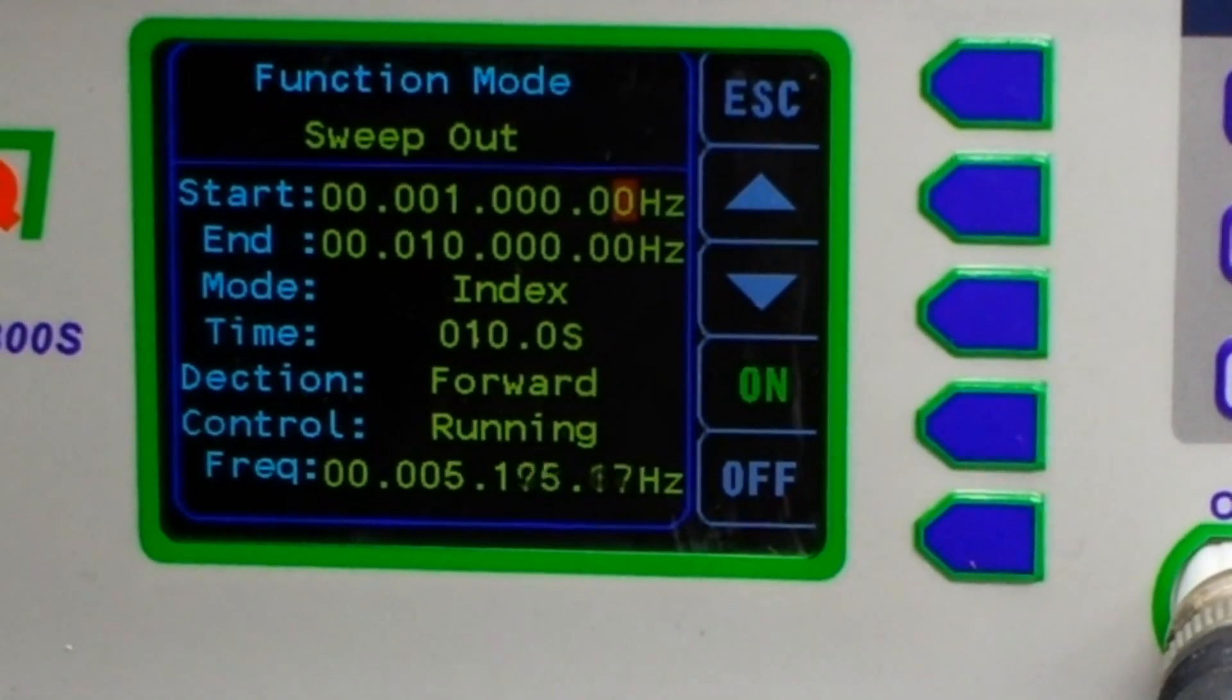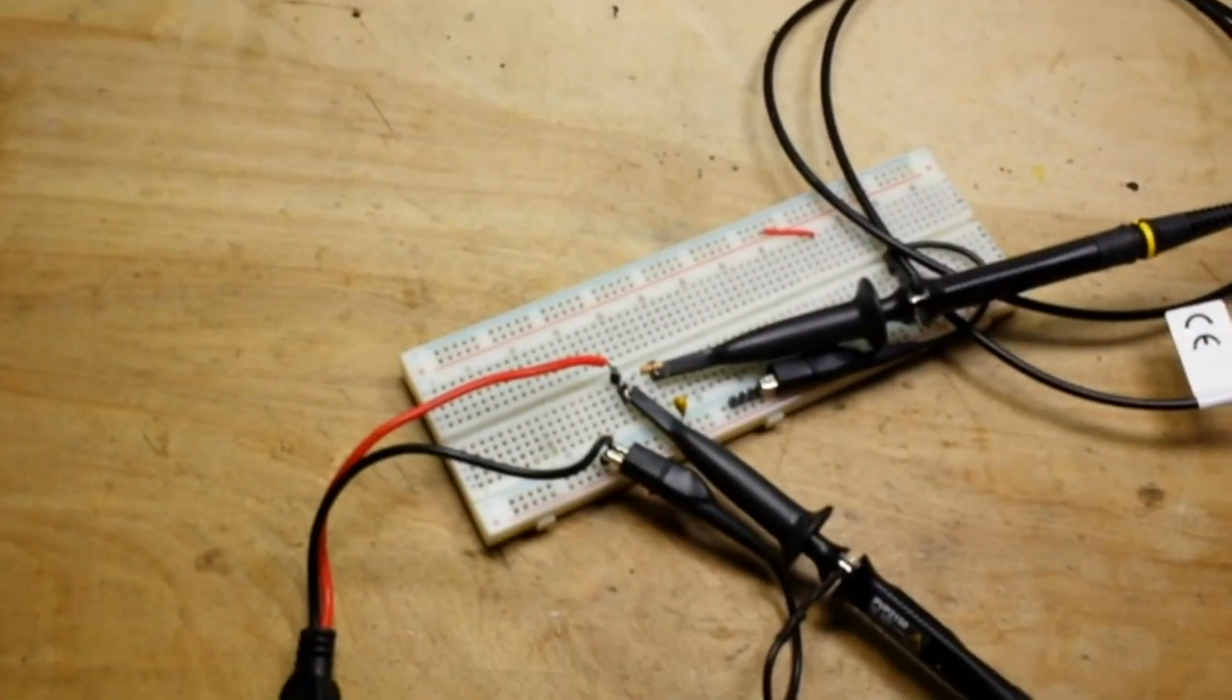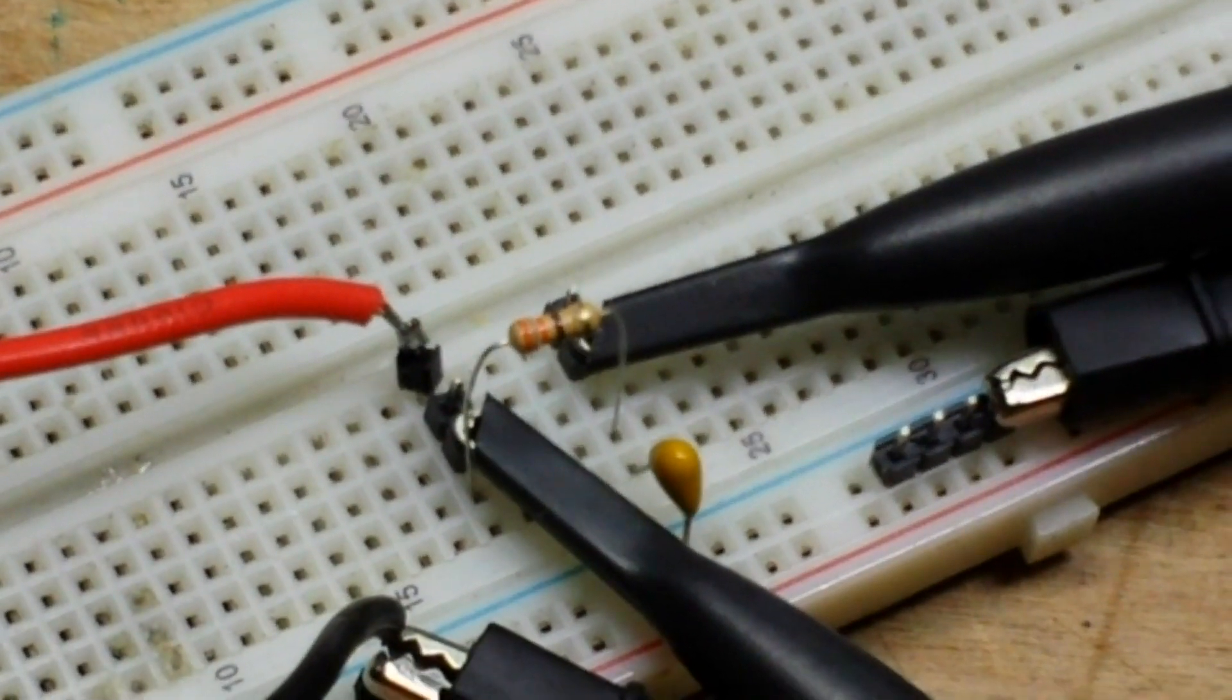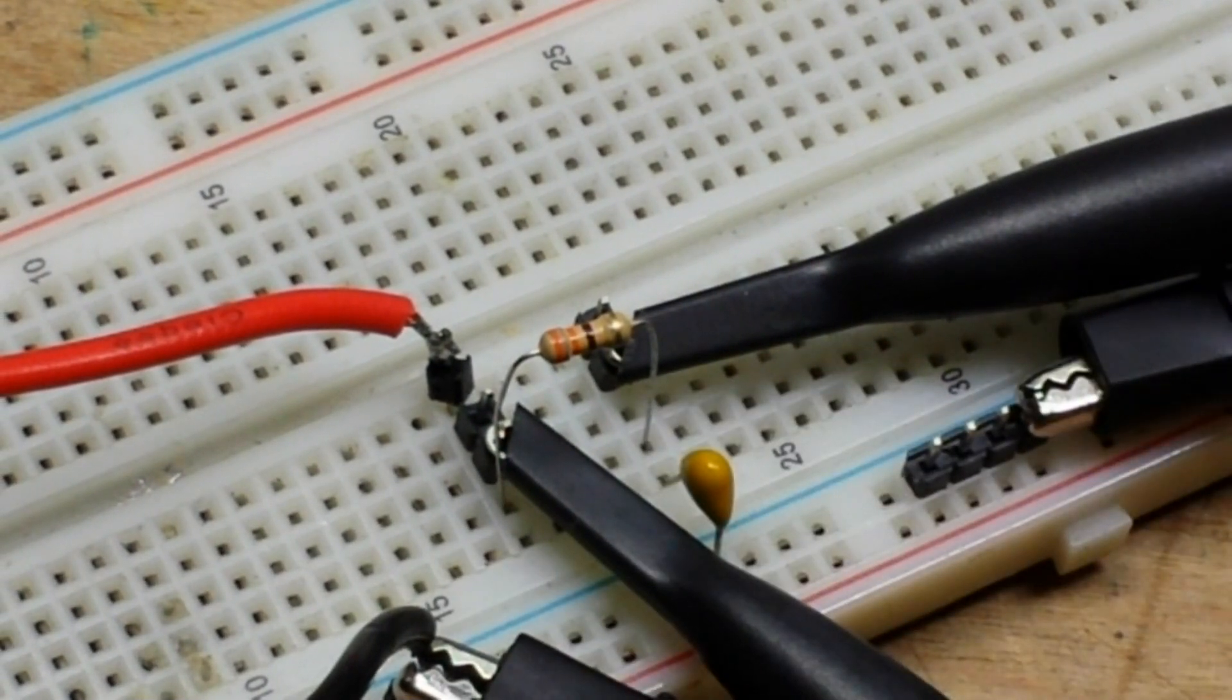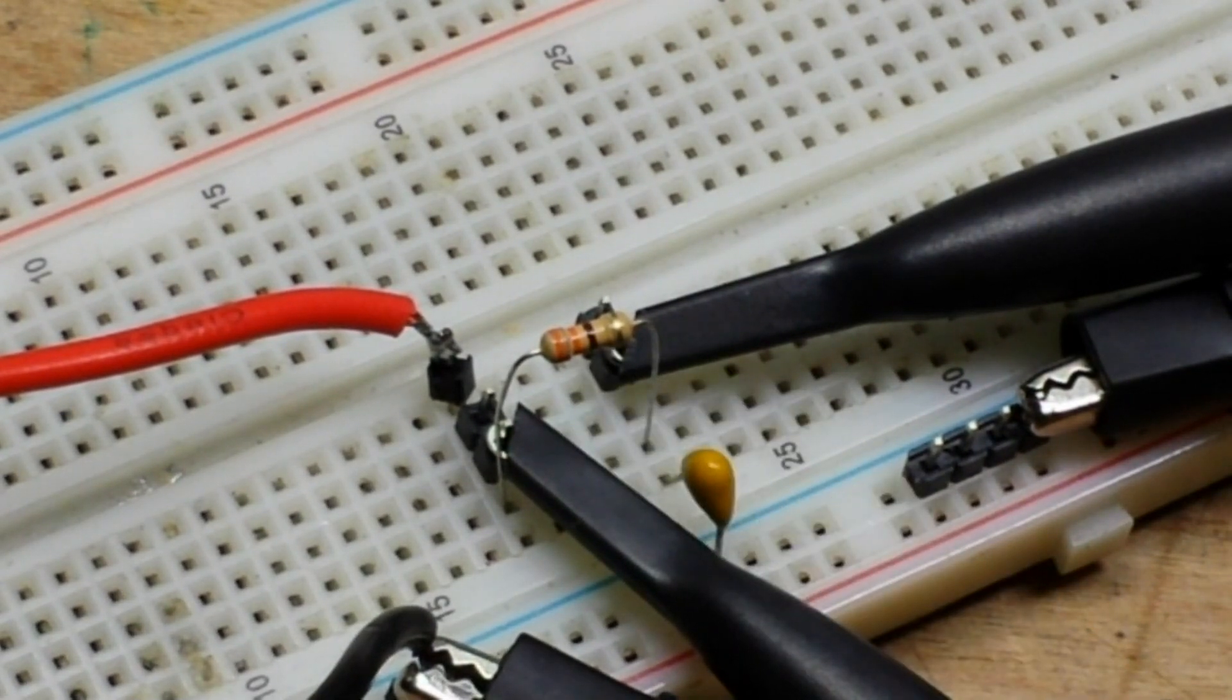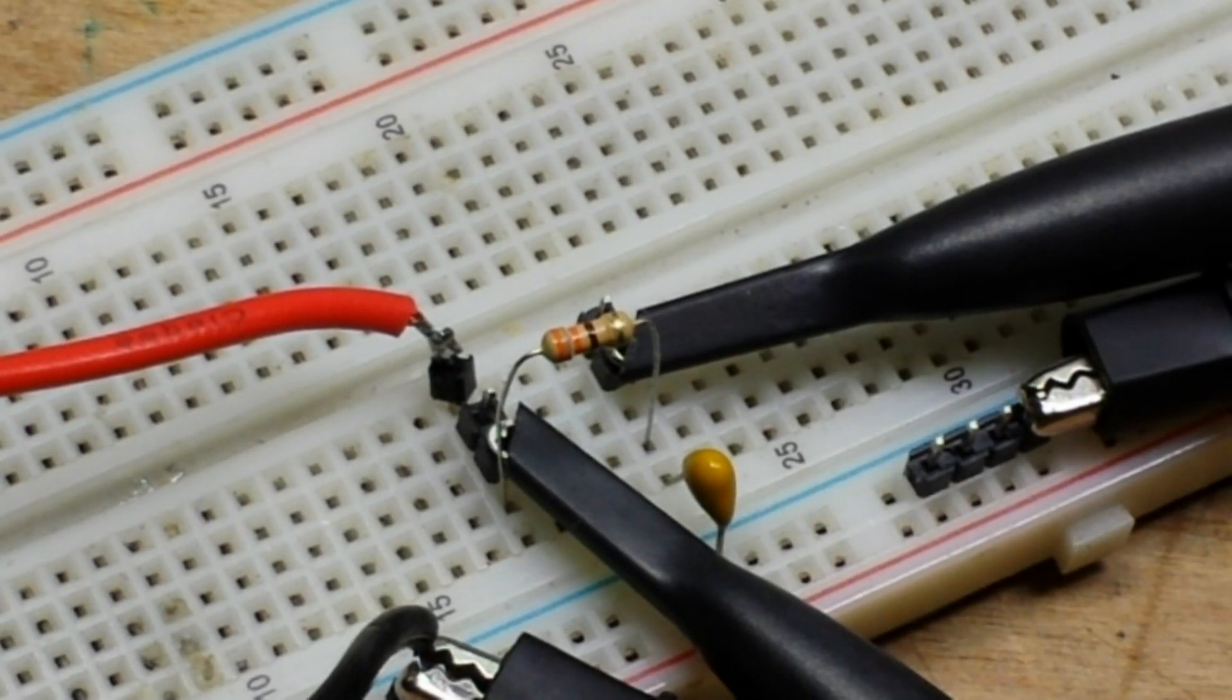That's what we got going on. We're just running a little sweep here over ten seconds. What I'm running it into is a simple low-pass filter which you see right here. Our low-pass filter is of course a resistor and a capacitor running to ground. This particular resistor, orange orange black, that would be 330 ohms, and the capacitor is a 104, so that's 0.1 microfarad.